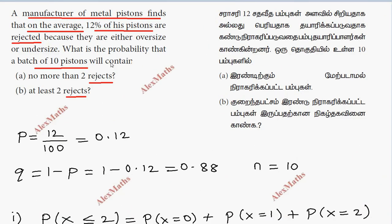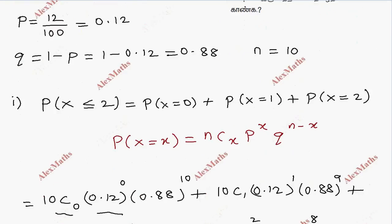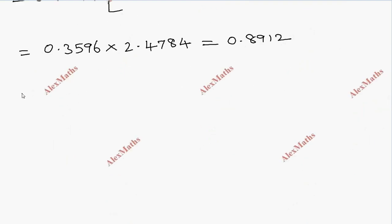Question 2: At least 2 rejects are being given. At least 2 or more. So question 2, P of at least 2. P of x greater than or equal to 2. That means 2, 3, 4, 5, 6 till 10. This is 1 minus P of x equal to 0 and 1. What is left out.